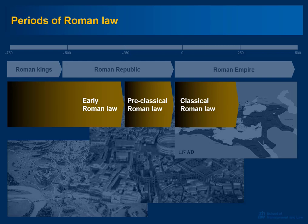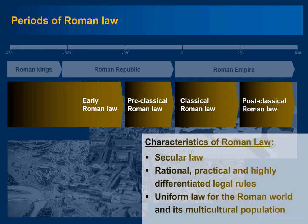In their writings, legal reasoning acquired the crystal clarity and sharp conciseness we admire in Roman law. In the second half of the Roman Empire, economic circumstances grew more difficult, and along with the economy, the legal system began to decline. So what is special about Roman law? What are its characteristics? In contrast to other legal traditions, Roman law of pre-classical, classical, and post-classical times is not religion-based — it is secular. Furthermore, it offers rational, practical, and highly differentiated legal rules. And finally, it developed into a uniform law for the entire Roman world and its multicultural population.